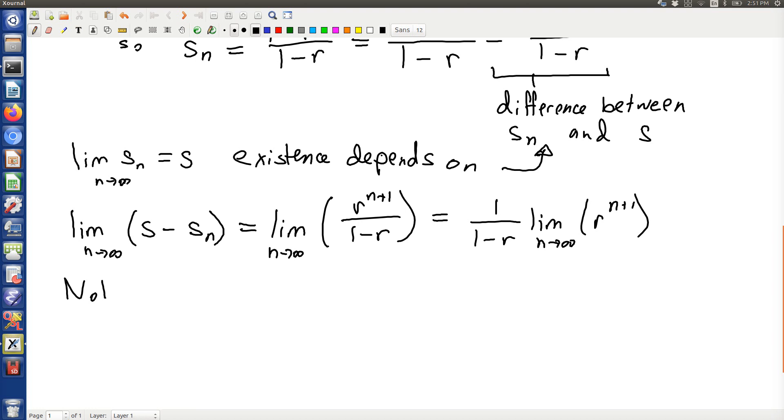So notice that this limit as n goes to infinity of r to the n plus 1 is equal to 0 if the magnitude of r is less than 1. And it's not existing otherwise.